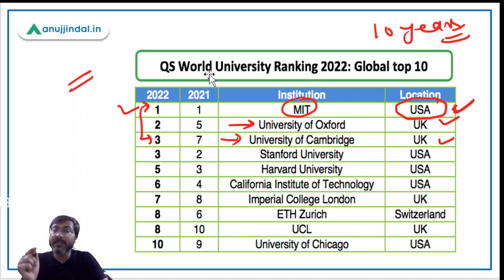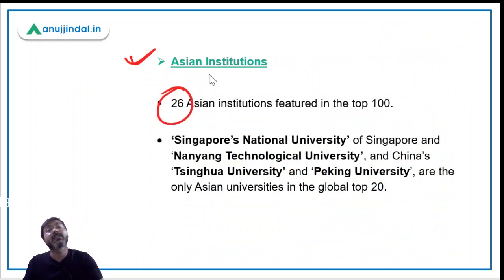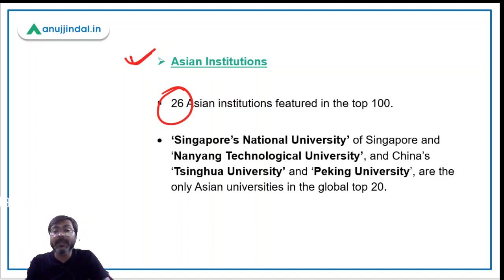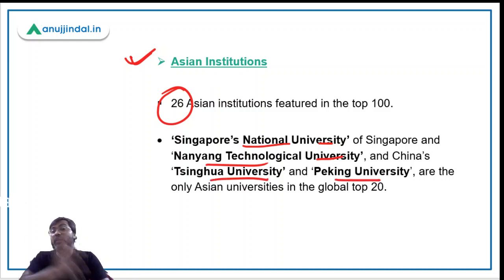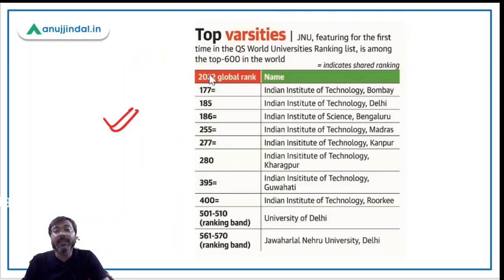Regarding Asian institutions, in the 18th edition there are 26 Asian institutions among the top 100 universities across the world. Among the top 20, Singapore's National University, Nanyang Technological University, and China's Tsinghua University and Peking University are the only universities from Asia that feature in the top 20.